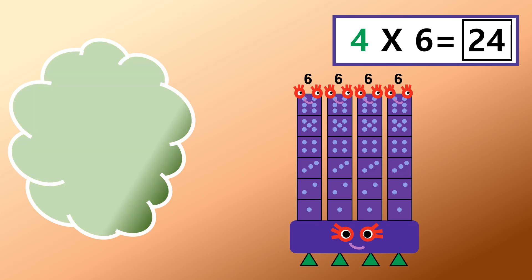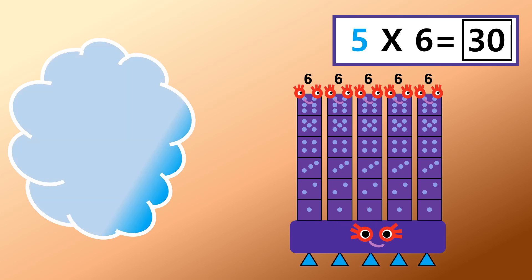Four sixes are twenty-four. Super duper, add one six more. Five sixes are thirty. Roll up, roll up for thirty.